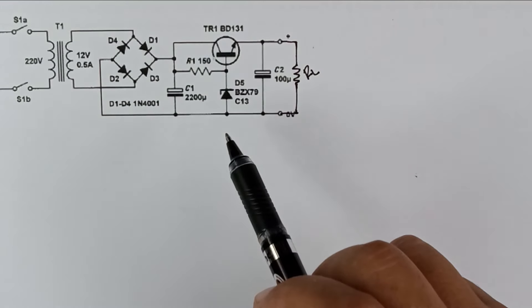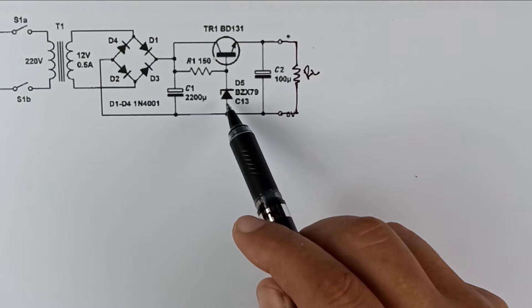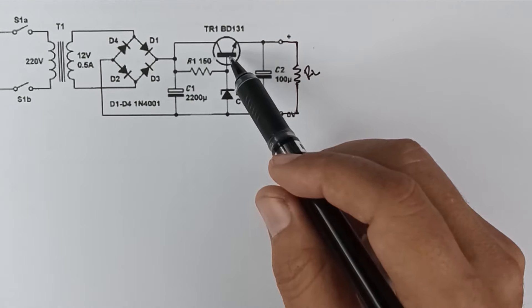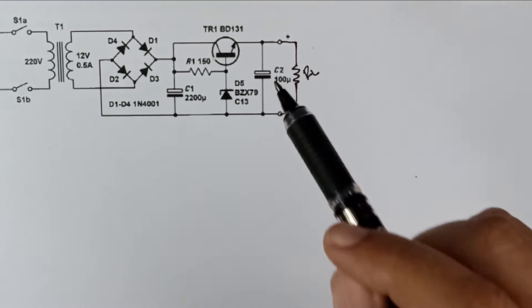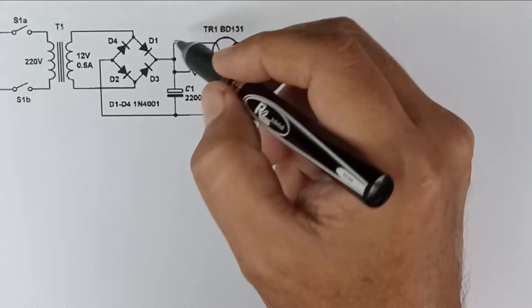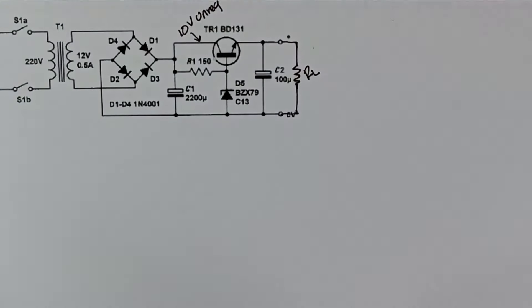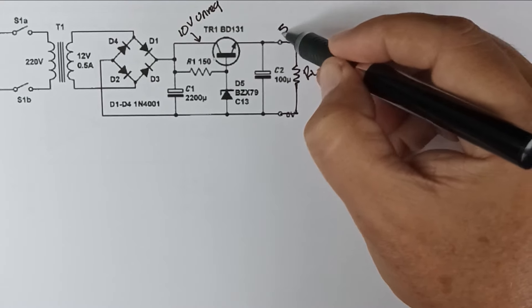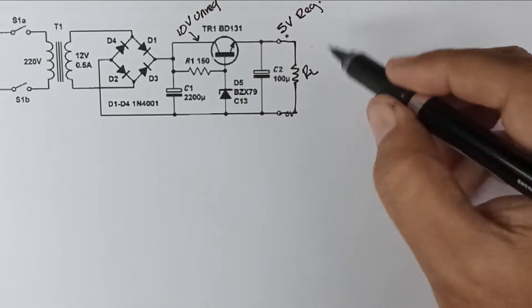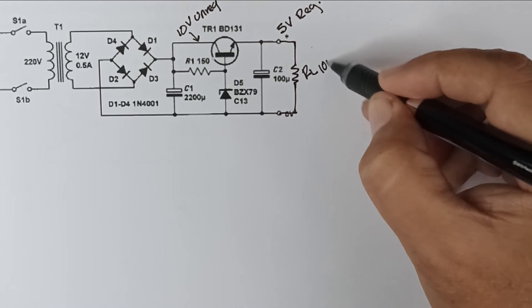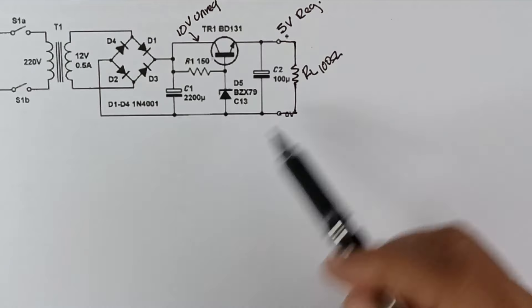The regulator in this power supply is composed of R1, which is the resistor, the Zener diode, the transistor, and the output capacitor. That is what forms the regulator in this circuit. So let's say that I have 10 volts unregulated at this point, and I want to output 5 volts across the load. Let's say that my load is 100 ohms, and I want to put 5 volts of voltage across the load.